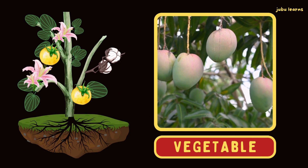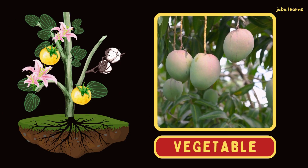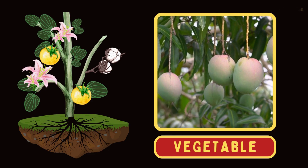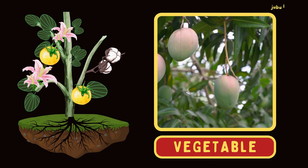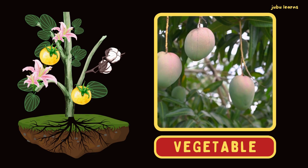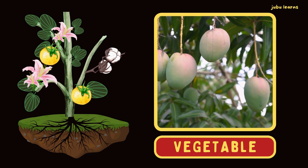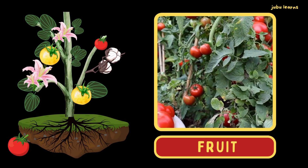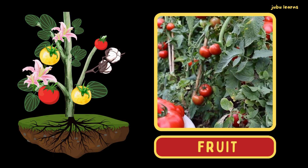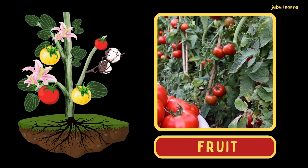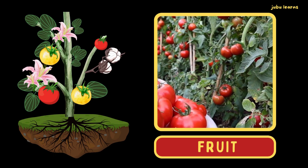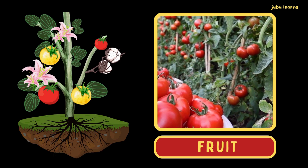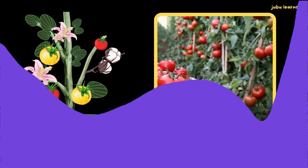Vegetables: flowers develop into vegetables which are eaten by us. Fruits: flowers develop into delicious fruits which are eaten by us.